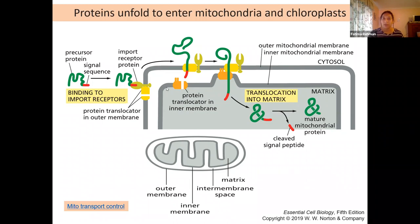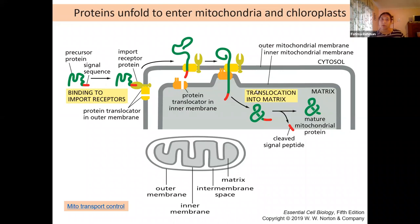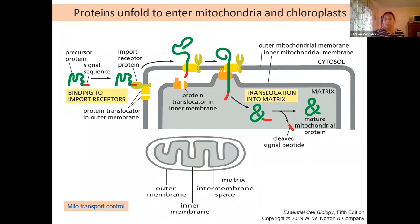Once into the first intermembrane space, there is going to be a second translocator that will again recognize the signal sequence, causing it to come in close contact with the outer membrane translocator, and then move it further into the inner mitochondrial space. If that protein was going to hang out in a different space in the mitochondria, it will just go there. But if it is going all the way into the matrix, it binds to the import receptor recognizing the signal sequence, which transfers it into the protein translocator in the outer membrane, goes into the inter-membrane space, then binds to a second translocator protein in the inner membrane to move it into the matrix.